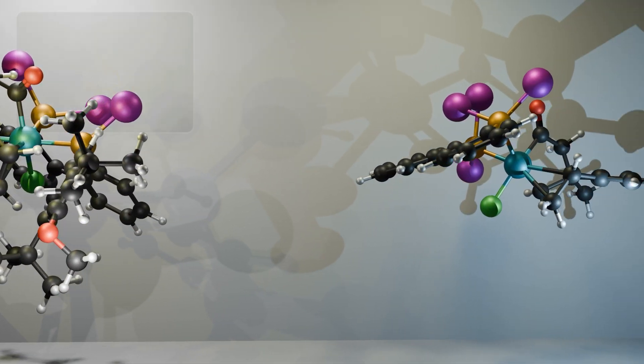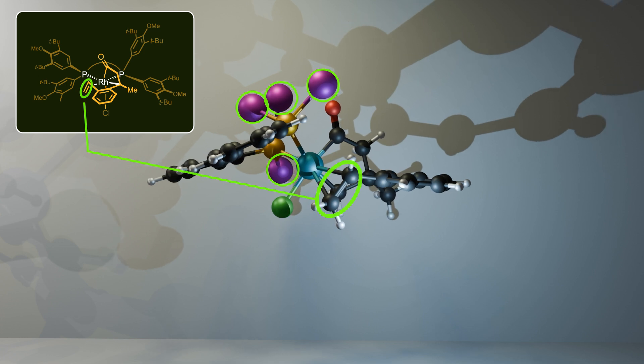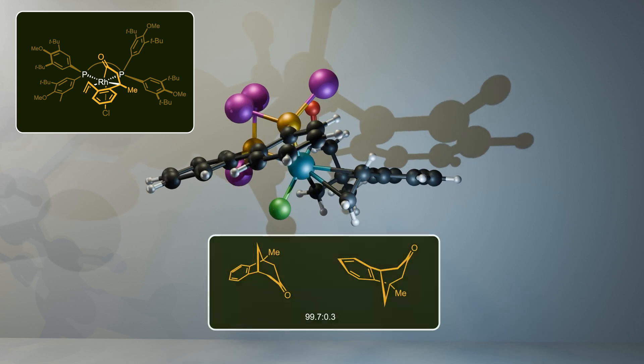As you see, in the second transition state, the double bond moves away from the bulky substituents, eliminating the steric interaction. As a result, the product formed through this transition state is the dominant product, leading to the high enantioselectivity.